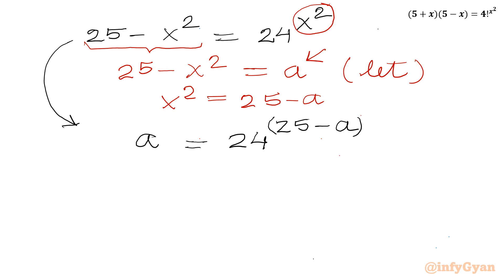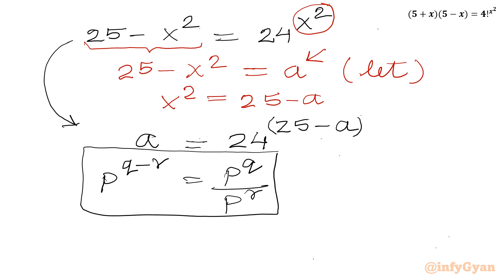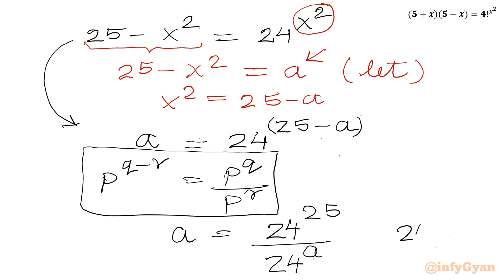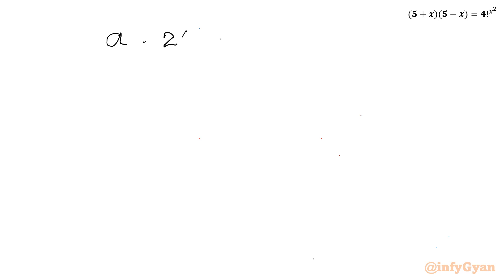Now I will write one property from exponents. Since 24 to the power a is an exponential function which cannot equal zero, I can cross multiply. So a times 24 to the power a will be equal to 24 to the power 25. That gives us: a times 24^a = 24^25.